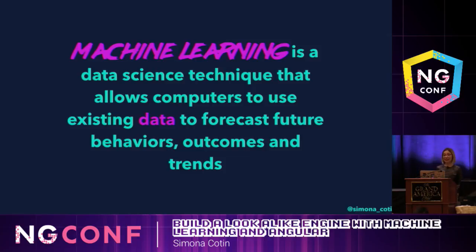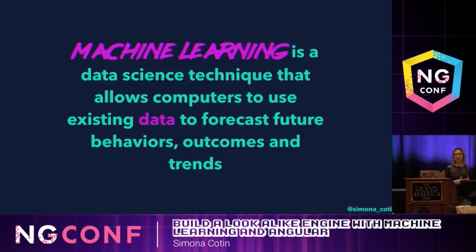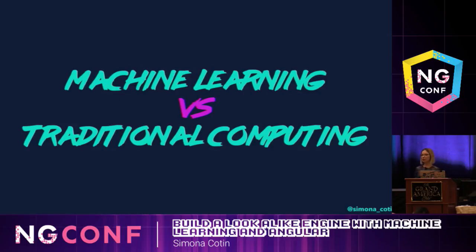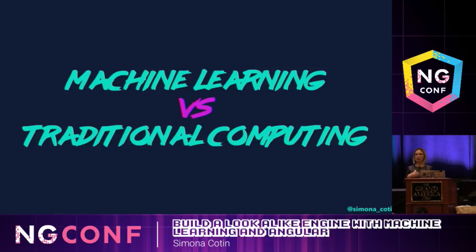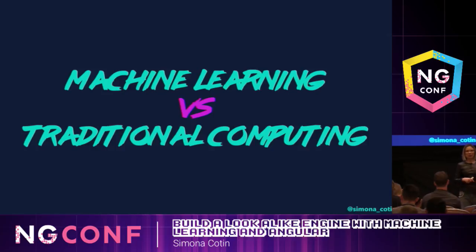Machine learning is a data science technique that allows computers to use existing data to forecast future behaviors, outcomes, and trends. This is basically where computers have the ability to predict the future. And if we were to think of this application where we're trying to recognize faces, in a traditional computing approach, what we would do is have thousands of ifs and elses to figure out whether someone's faces look similar to another one.